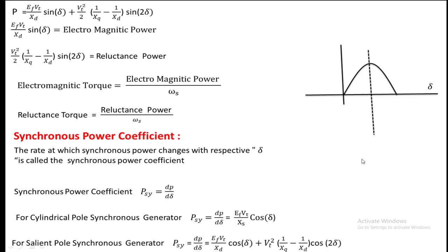For the cylindrical rotor, delta is on the x-axis and power on the y-axis. If you differentiate the P vs. delta curve with respect to delta you get the synchronous power coefficient, which follows a cosine profile. If the synchronous power coefficient is positive, the machine is stable; if negative, it is unstable. As long as delta is less than 90 degrees, whether the machine is a generator or a motor, it will be in the stable region; otherwise the machine becomes unstable.